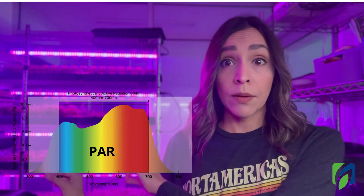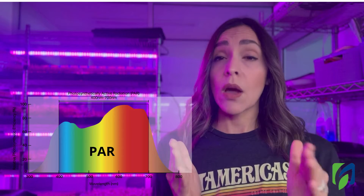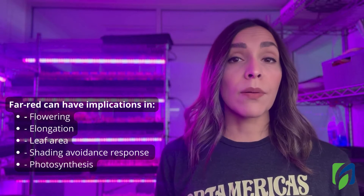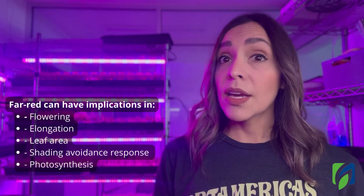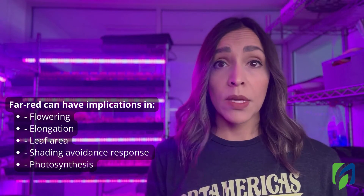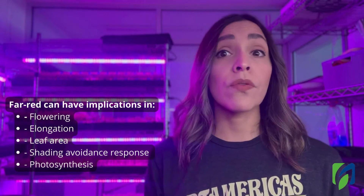Far red is from 700 to 800 nanometers, so it's outside of PAR. It's not directly related to photosynthesis, but we know it can be involved in many different plant processes. Based on research, the most useful range is from 700 to 730 or 750 nanometers. Far red can have implications in processes like the shading avoidance response, which can cause stretching or increase leaf area, and it can also be involved in flowering and be indirectly related to photosynthesis.